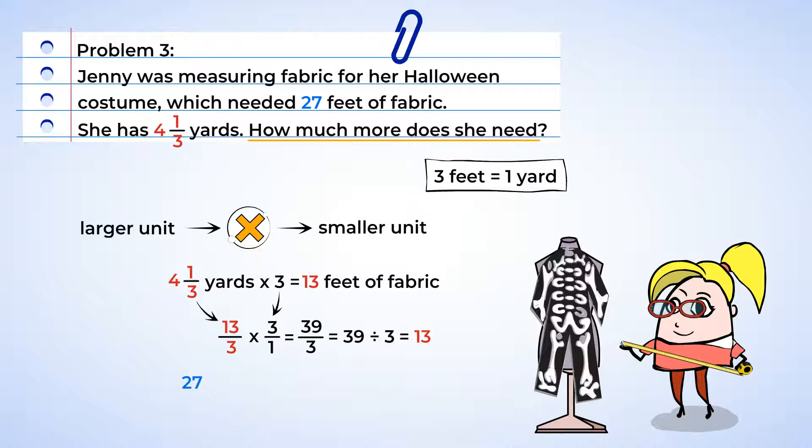Now, remember, her costume needs 27 feet. So, we can take the total amount that she needs and subtract the amount that she already has. 27 minus 13 is equal to 14. All right, Jenny needs 14 more feet of fabric. And I bet if she hurries, she can get to the store, buy the fabric, and get back in time to eat Mia's lasagna with us.